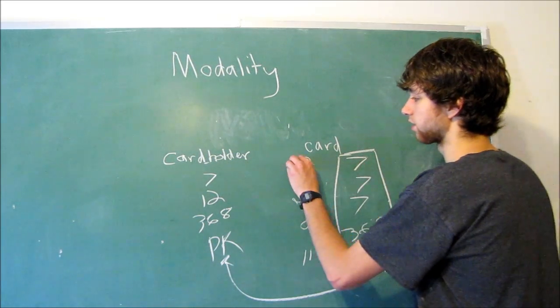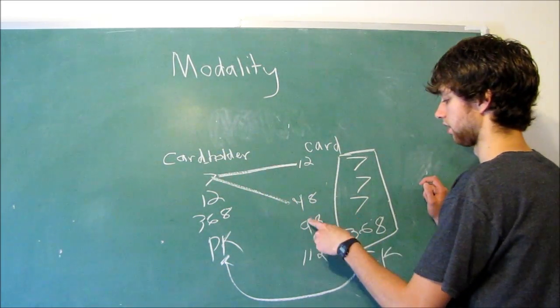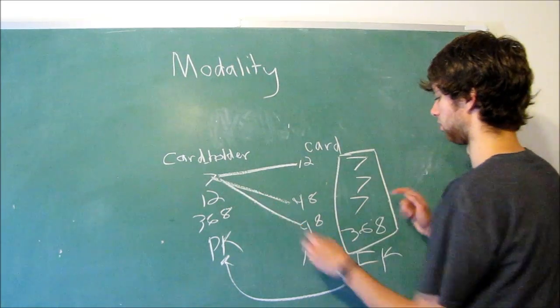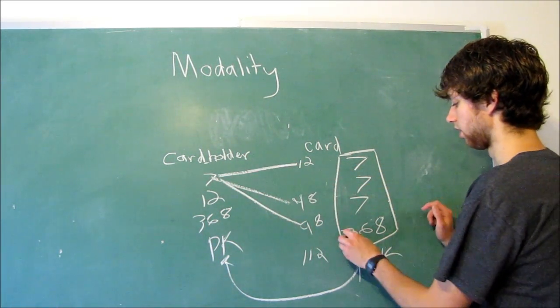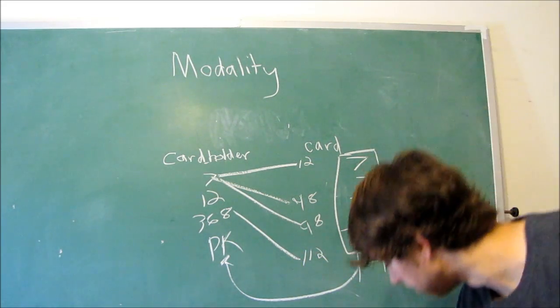So seven, this card is going to be owned by that person. Seven, this card is going to be owned by that person. Seven, this card is going to be owned by that person. So all of these three cards are owned by that person. 368, that's going to be owned by somebody else.